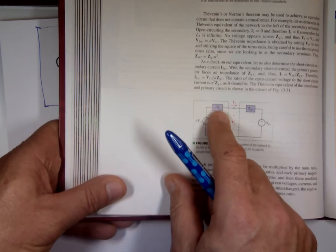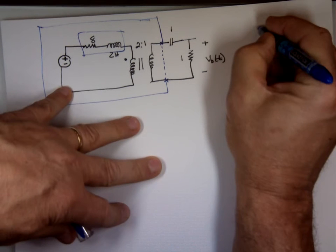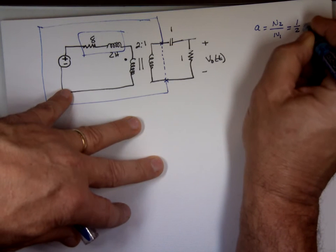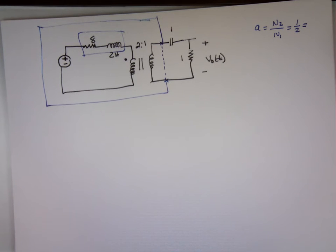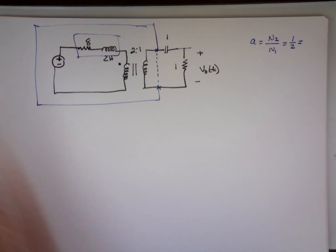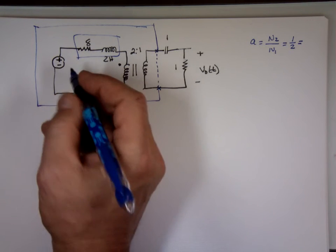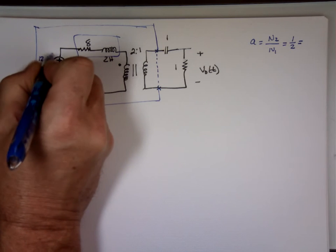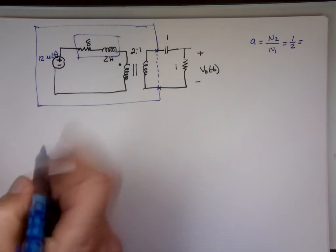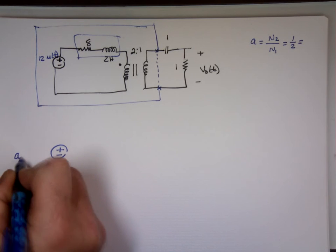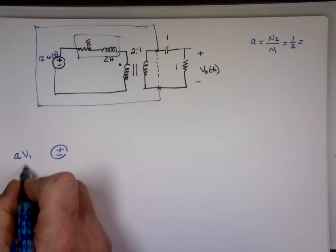Now what is a? a equals the number of turns on the second one to the number of turns on the first one, so n2 to n1, which is one to two, which is a half. So what's gonna happen? I forgot to write the value of the source here. This was 12u(t). So if I try to find the equivalent, a is one-half. The value of this source will be what? a times V_1. a is one-half, one-half times 12, that'll be 6u(t).